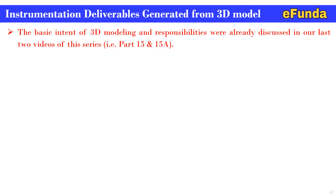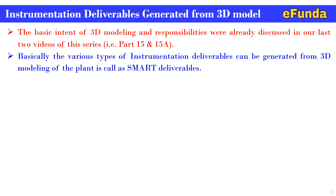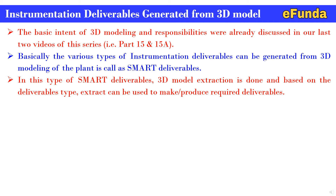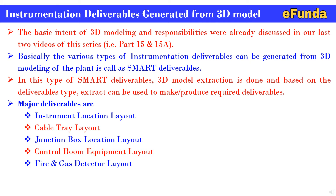The basic intent of 3D modeling and its responsibilities were already discussed in the last two videos of this series, Parts 15 and 15a. Basically, the various types of instrumentation deliverables that can be generated from 3D modeling of the plant are called smart deliverables. In this type of smart deliverables, 3D model extraction is done, and based on the deliverable type, the extract can be used to produce the required deliverable.